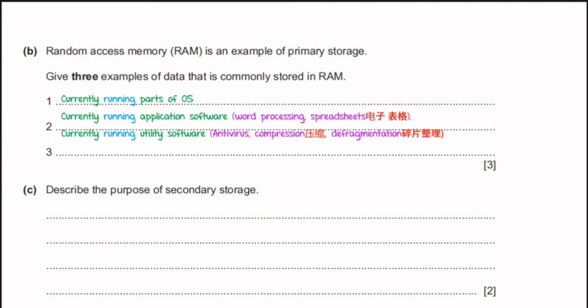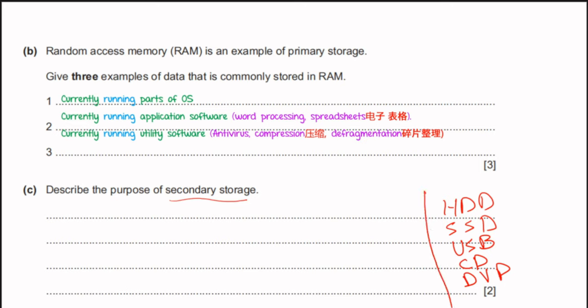Part C: describe the purpose of secondary storage. Secondary storage stores data for long-term use. Types include HDD, SSD, USB flash drives, CDs, and DVDs. Its purposes are: to store data for long-term use, and to transfer data to another computer — for example, using a USB flash drive or CD to copy data from a Windows laptop to a MacBook.